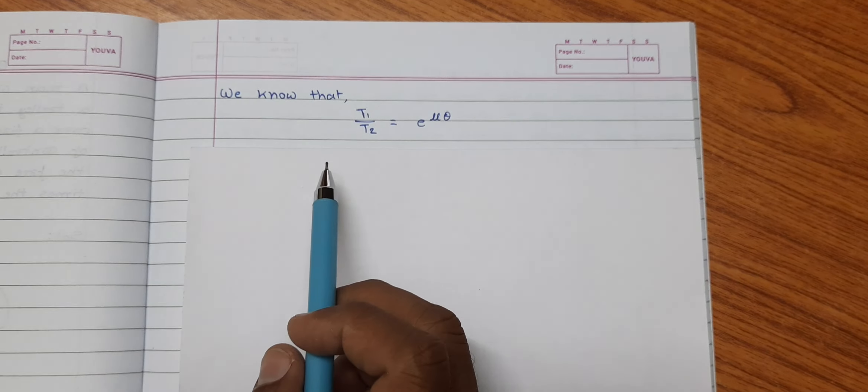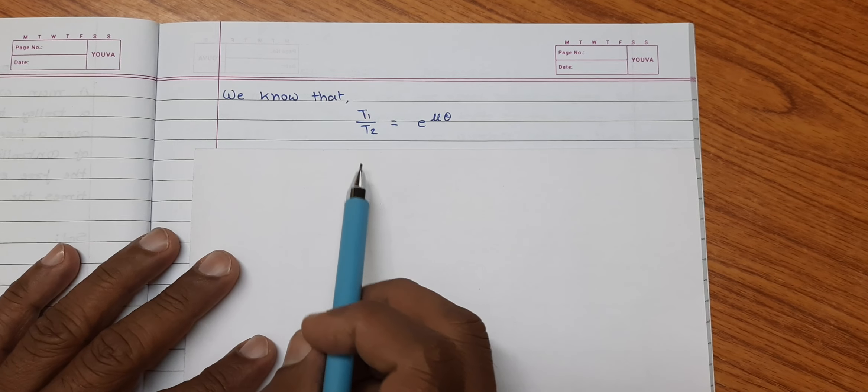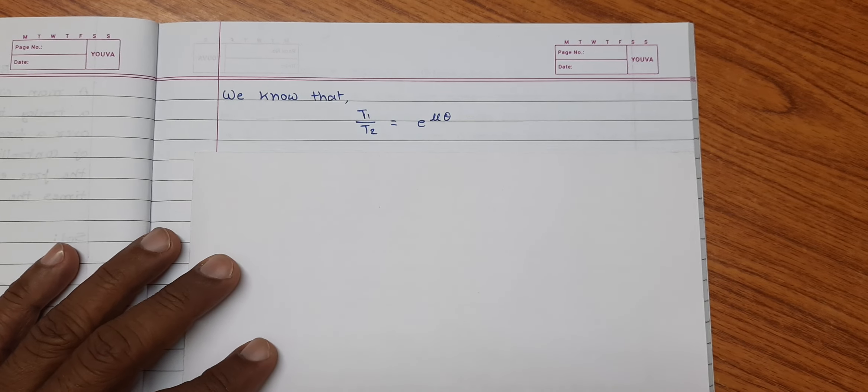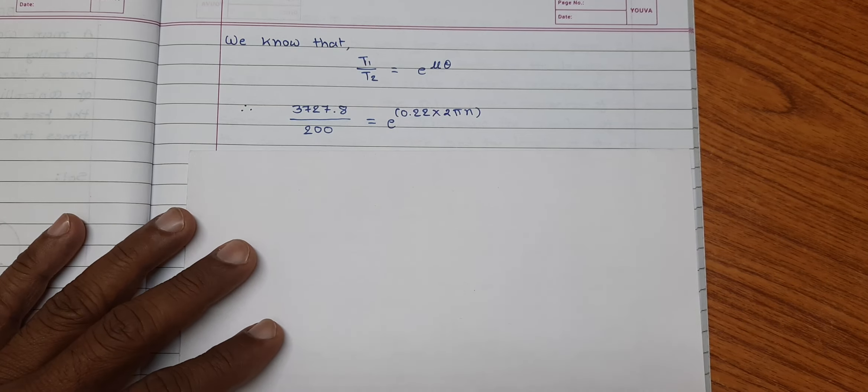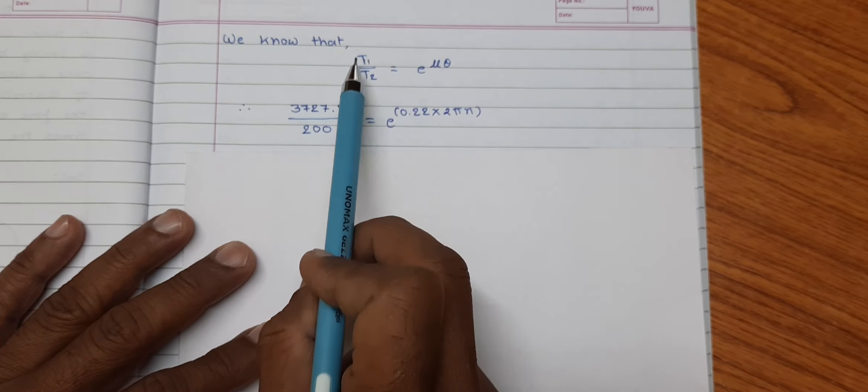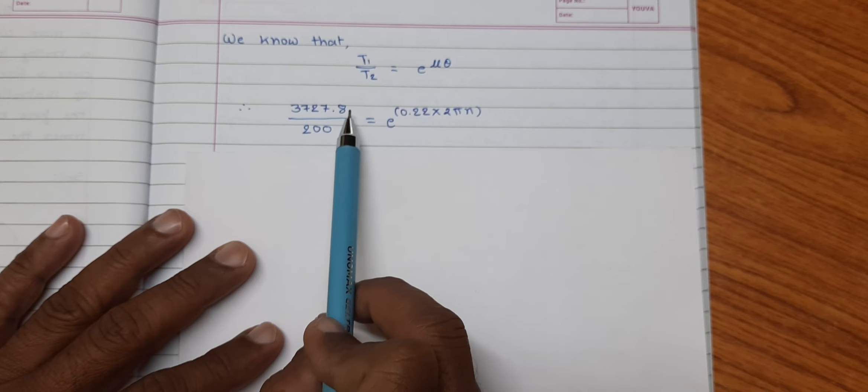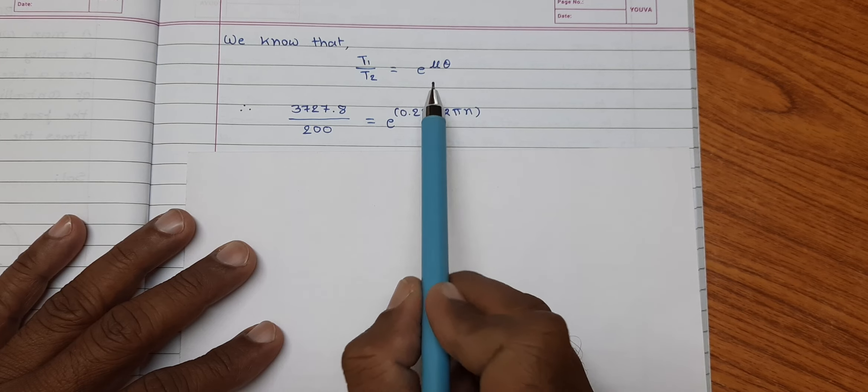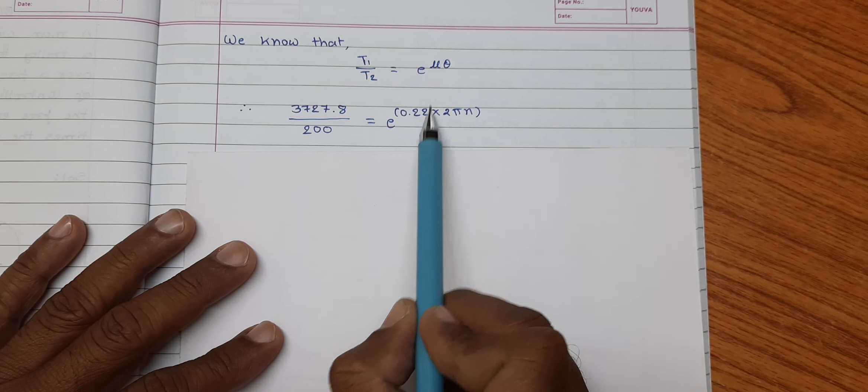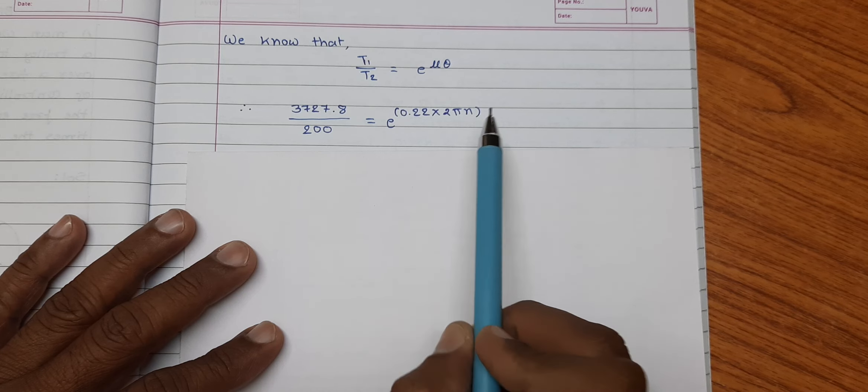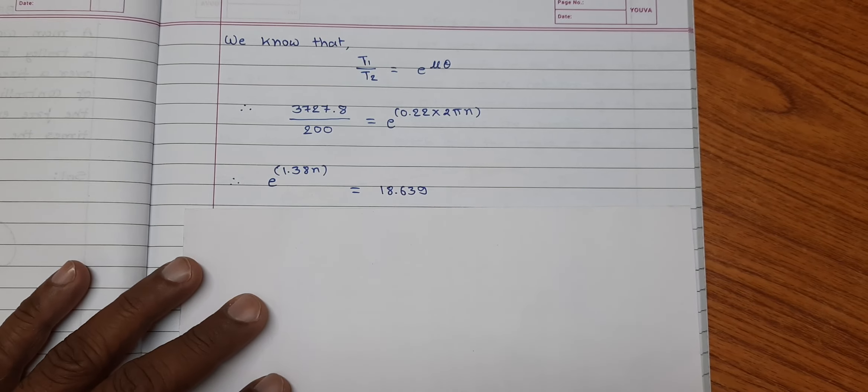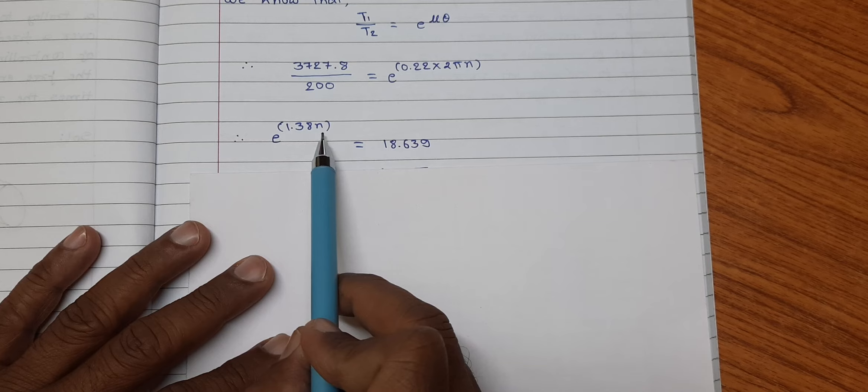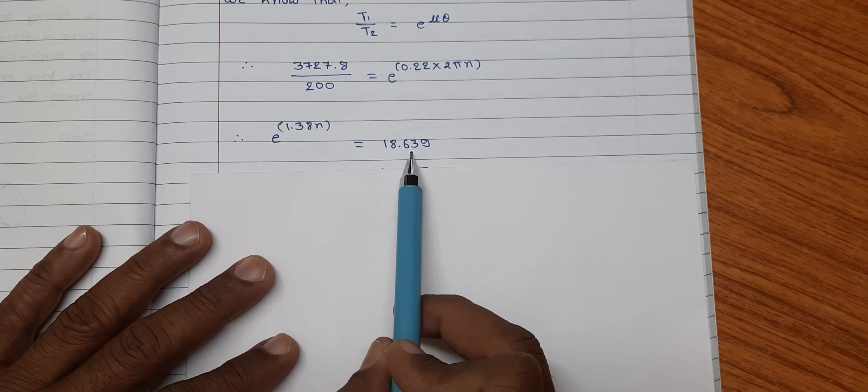Now, we know that the relation between tight side tension and slack side tension T1 upon T2 is equal to E raise to mu theta. So, substituting the values of known parameters, T1 is equal to 3727.8 divided by T2 is equal to 200 is equal to E raise to mu is equal to 0.22 and theta is equal to 2 pi N. So, rearranging the terms and calculation we found E raise to 1.38 N is equal to 18.639.